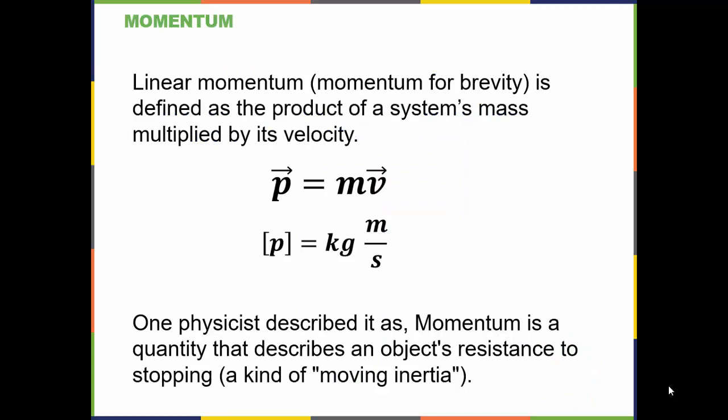Momentum, or linear momentum, is defined as the product of the system's mass multiplied by its velocity. We use a lowercase p, and it's a vector because velocity is a vector. So the momentum p equals the mass times the velocity. The units of p are kilogram meters per second. One physicist described it as momentum is a quality that describes an object's resistance to stopping — a kind of moving inertia.